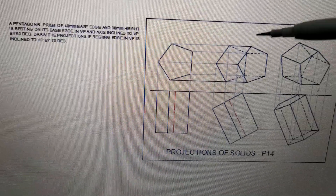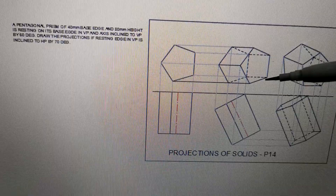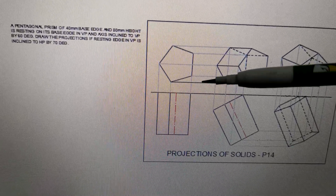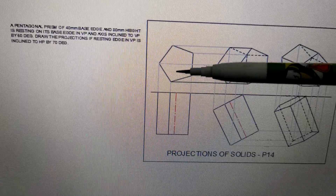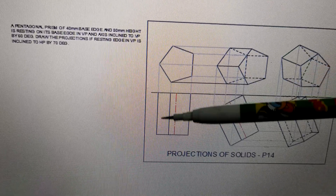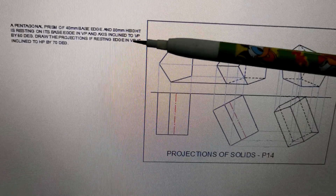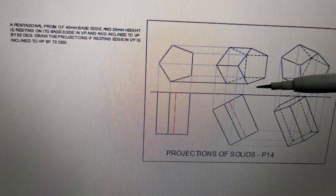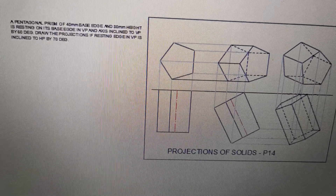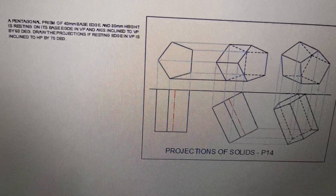Keep a note of all the various instructions — this is projections of solids. When you draw, all the dimensions used — the edge of the base, height, whatever angles they are making — all this information shown in the data must be included in the drawing. This completes the first problem.